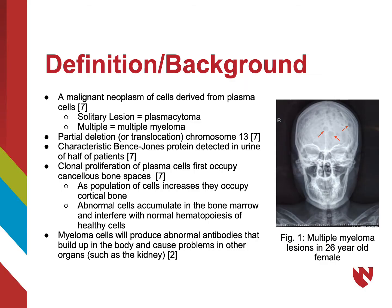The definition of multiple myeloma is a malignant neoplasm of cells derived from plasma cells. Multiple myeloma can present as a solitary lesion, which is termed a plasmacytoma, or the classic multiple lesions, which is known commonly as multiple myeloma. The partial deletion of chromosome 13, or chromosomal translocation, is reported as a common finding of multiple myeloma.